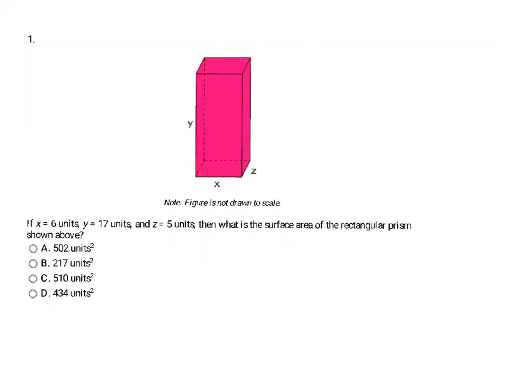Here I have a rectangular prism where X is 6, Y is 17, and Z is 5, and the question asks for the surface area. You can use the formula from your notes, or think about what surface area means: find the area of each of the six sides and add them together. Go ahead and pause the video and give it a try.